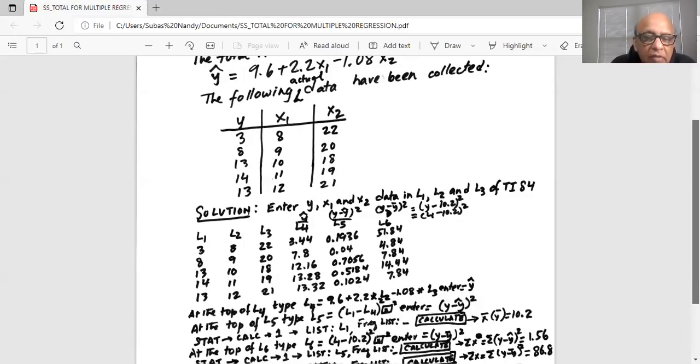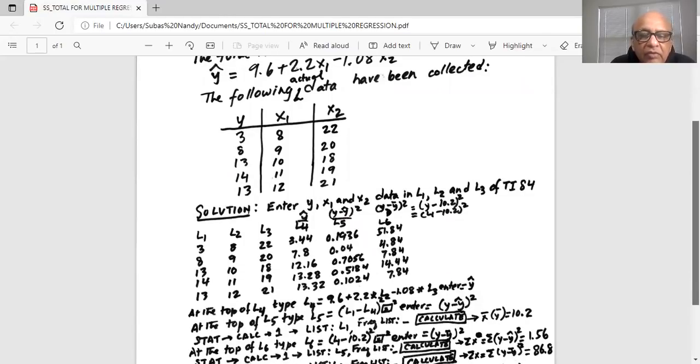Then you go to the top of L5 and type parenthesis L1, which is y, minus L4, which is y hat.